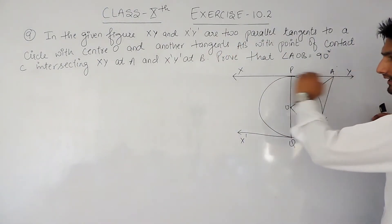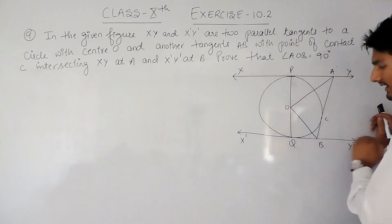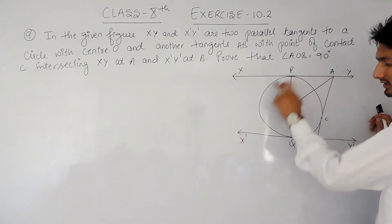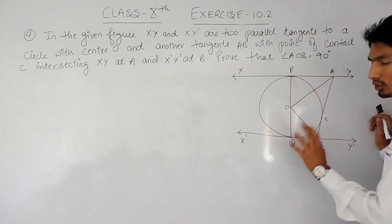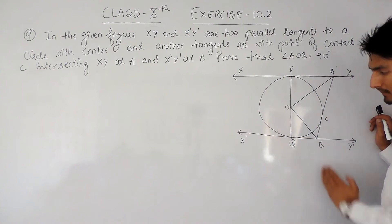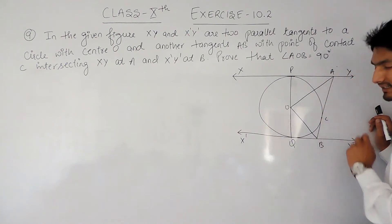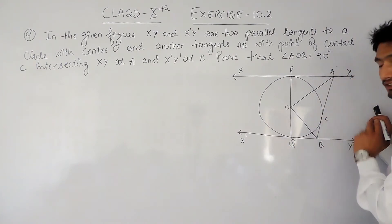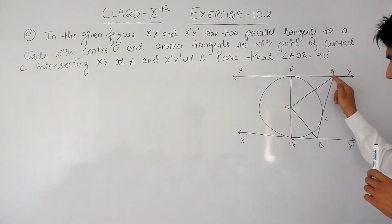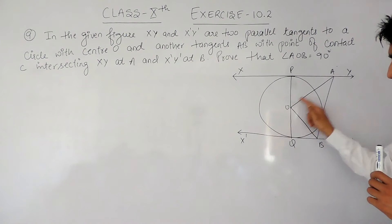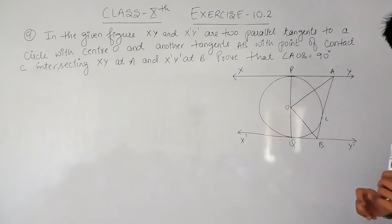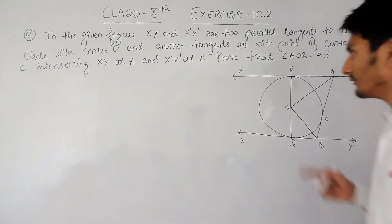In this figure, these two lines XY and X'Y' are two parallel tangents touching the circle at P and Q, and there is another tangent AB touching the circle at point C. We have to prove that angle AOB is equal to 90 degrees.